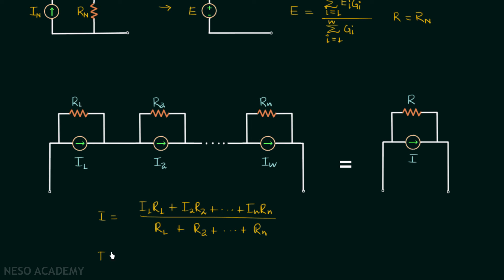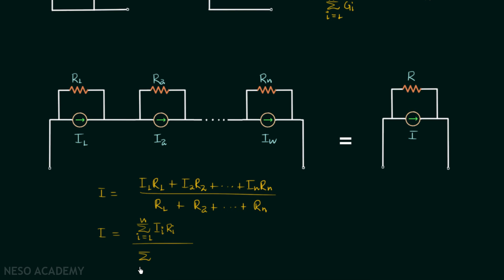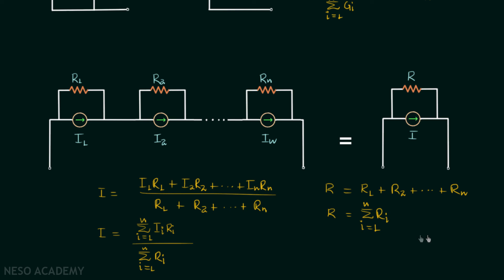This can be written as I = Σ(Ii·Ri) / Σ(Ri) for i = 1 to n. Resistance R = R1 + R2 + ... + Rn, or R = Σ(Ri) for i = 1 to n. In this manner you can replace this type of network with the simplified network using these values of I and R.